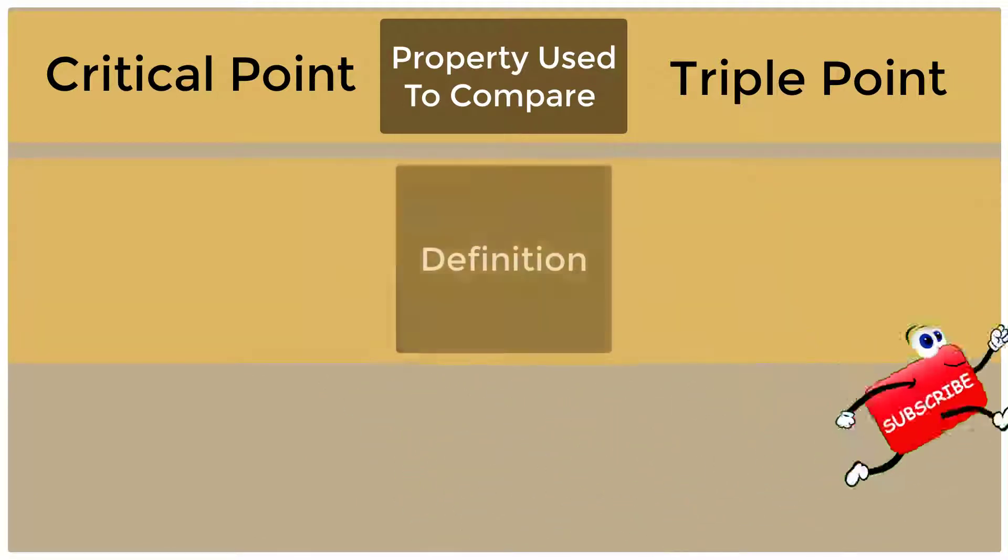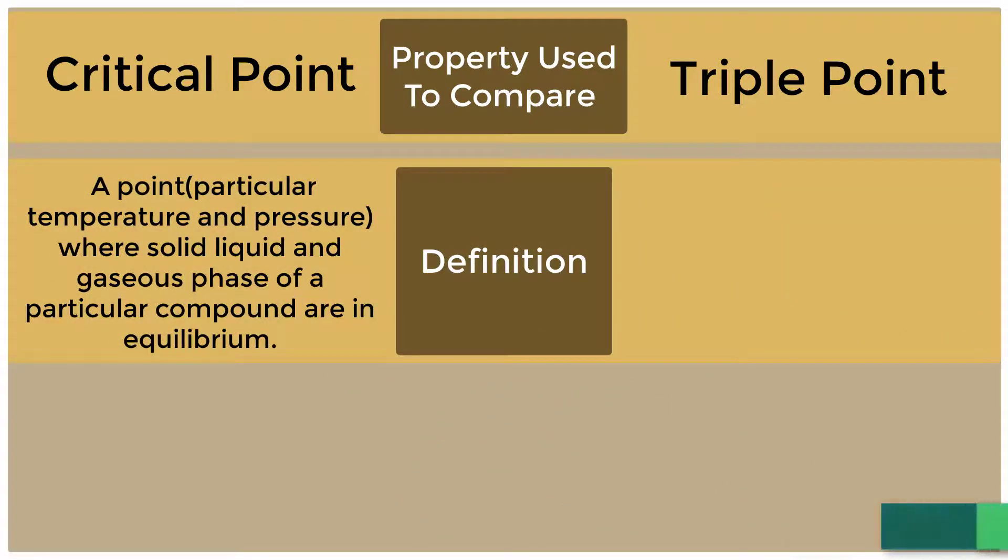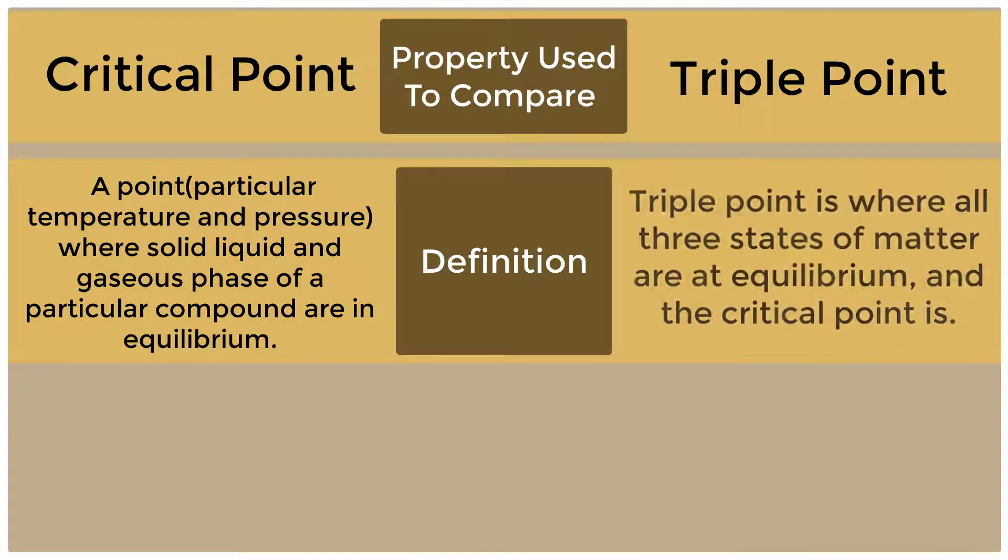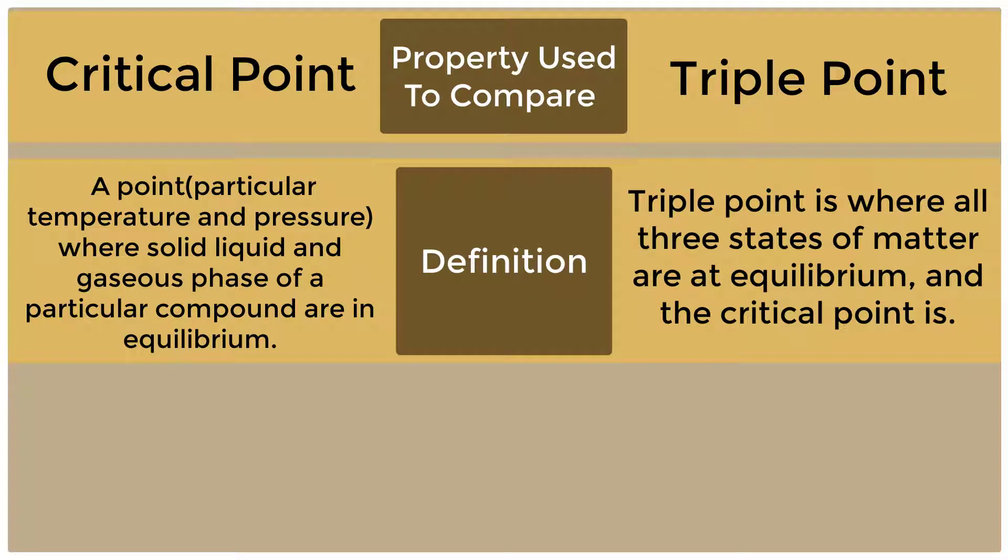Let's look at the definition. A point at particular temperature and pressure where solid, liquid, and gaseous phase of a particular compound are in equilibrium, that is critical point. Whereas triple point is where all three states of matter are at equilibrium and the critical point is.